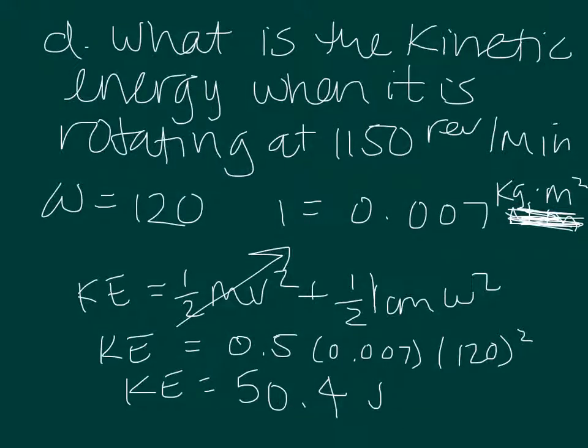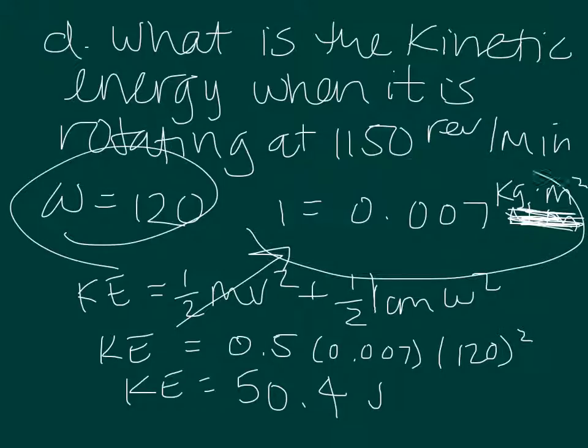So the next part of this problem asks us what the kinetic energy is when it's rotating at 1,150 revolutions per minute. We're given the angular speed, we already found that, 120 radians per second. Our moment of inertia here is 0.07 kilograms times meters squared.